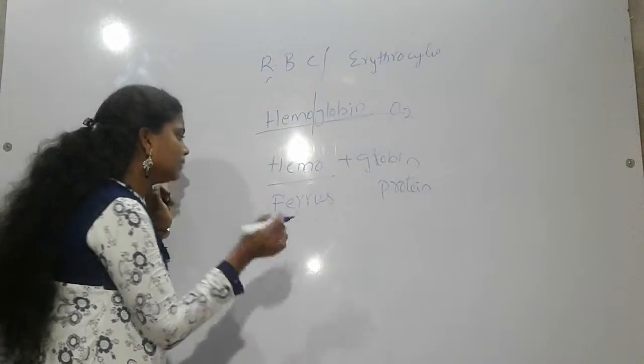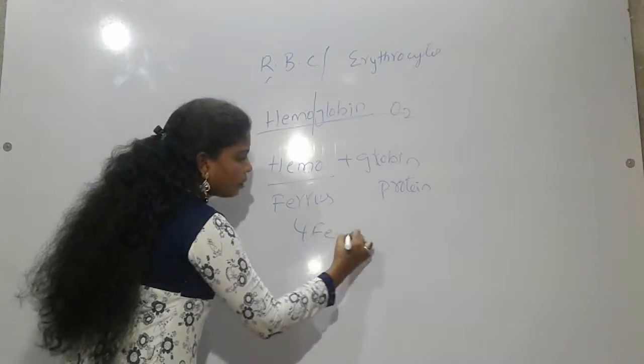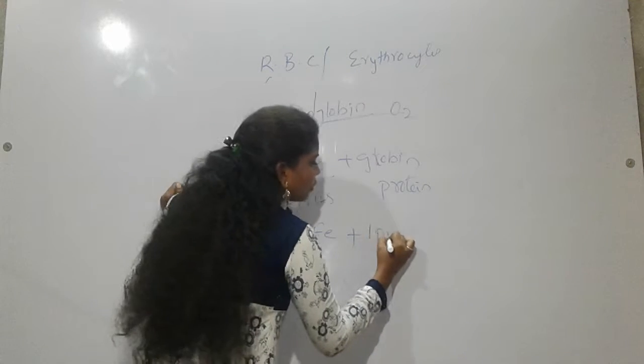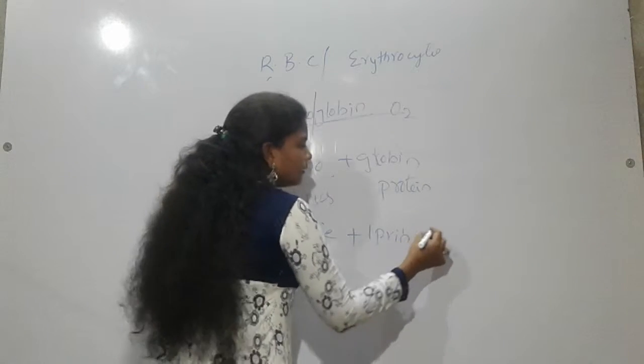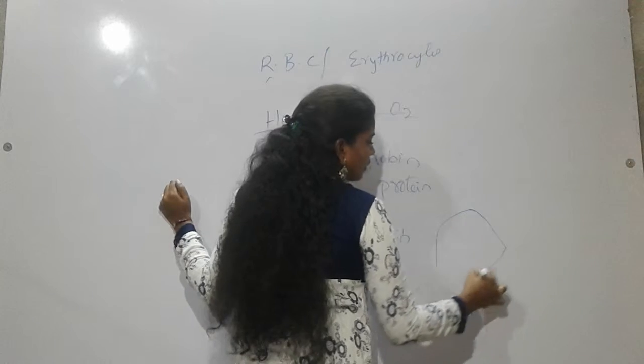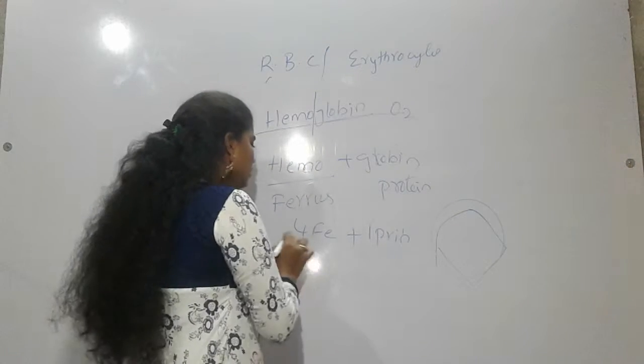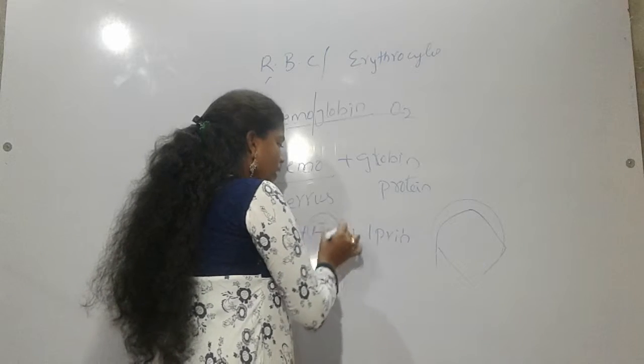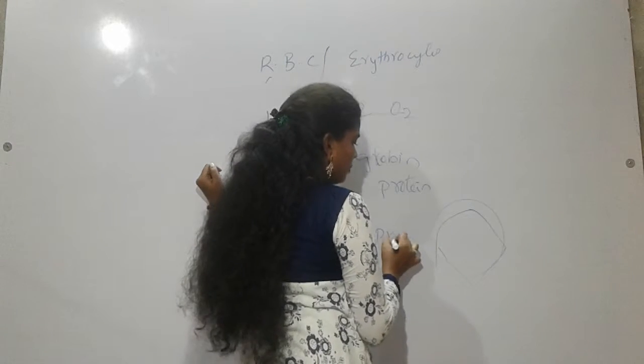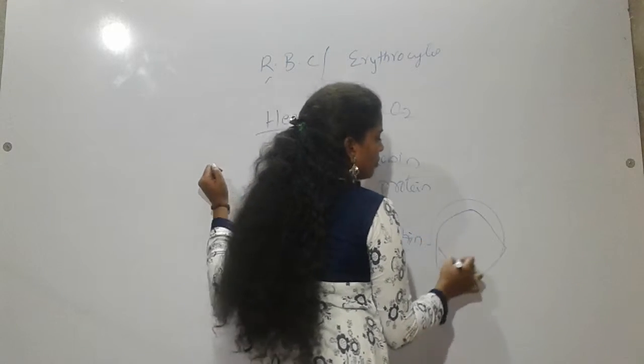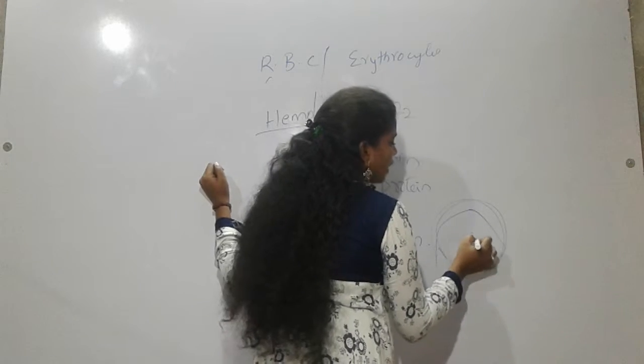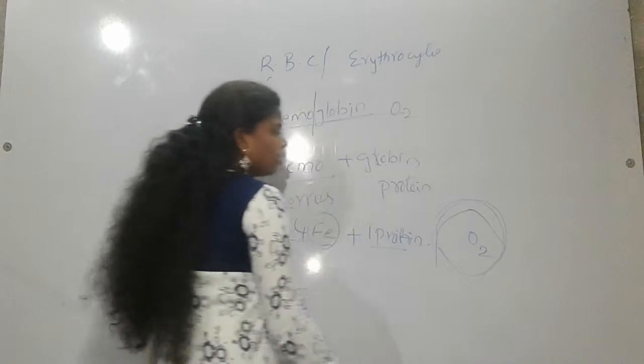It will be with 4 iron molecules plus 1 protein formed like 1 circle, like 1 constructed circle. With 4 iron contents and 1 protein, this leads to formation of 1 circle. It is very helpful for the carrying of oxygen.